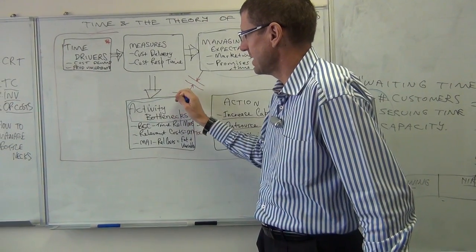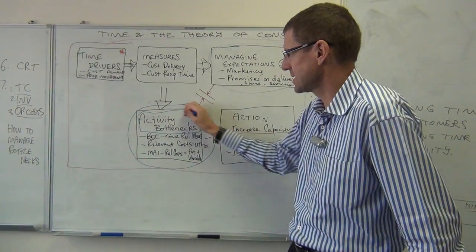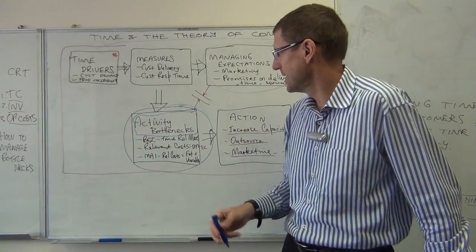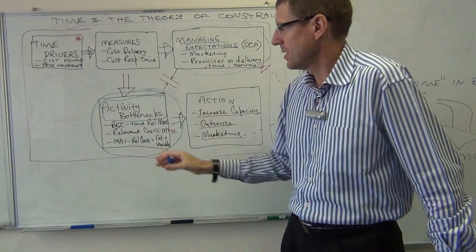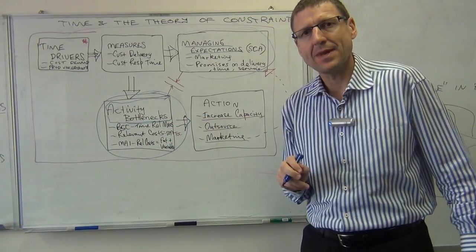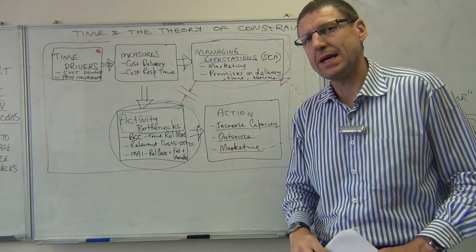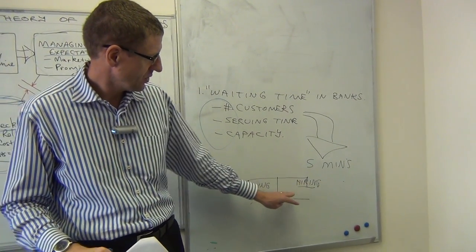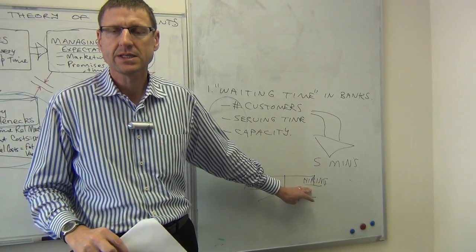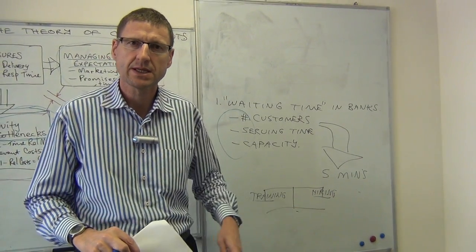And together with that, we need to deal with the bottlenecks. We need to work out, if we set a certain expectation, what is the bottleneck? And what are we going to do to fix that bottleneck? In the bank example here, we may fix that bottleneck through training or hiring new staff. And so we'll look at more examples in today's lecture.